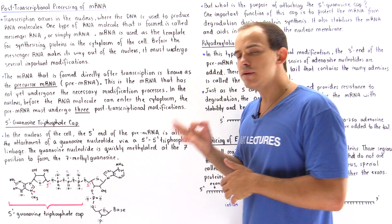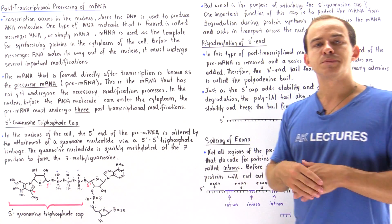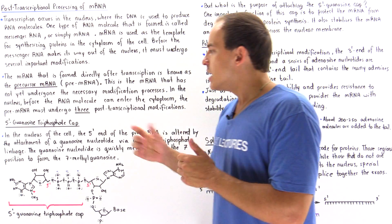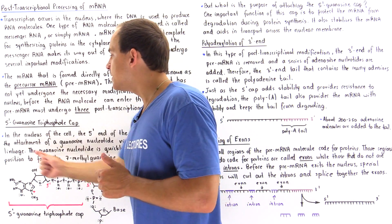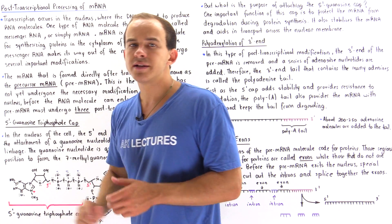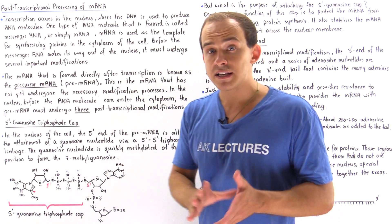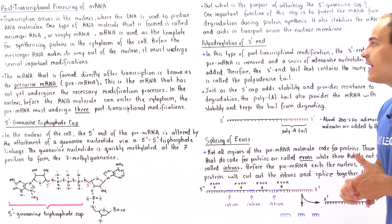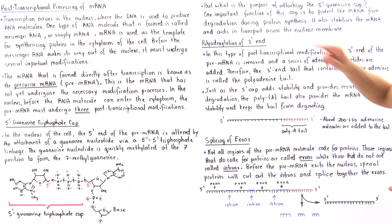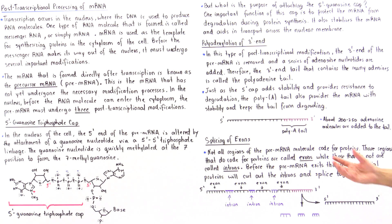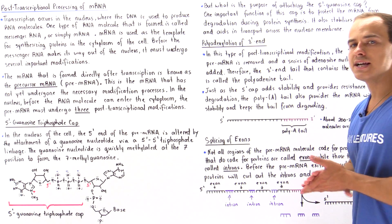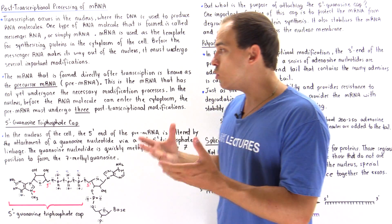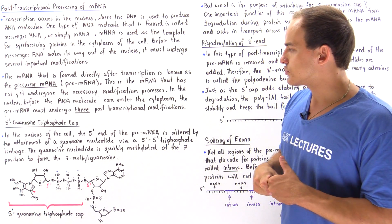There are three important types of post-transcriptional modifications: the addition of the 5' guanosine triphosphate cap, the polyadenylation of the 3' tail, and the splicing of our exons and the removal of our introns.